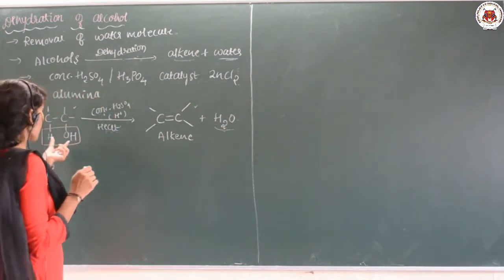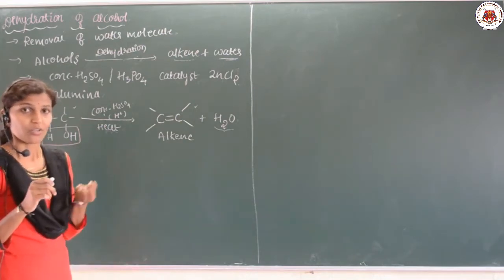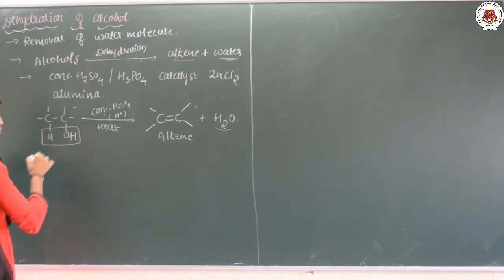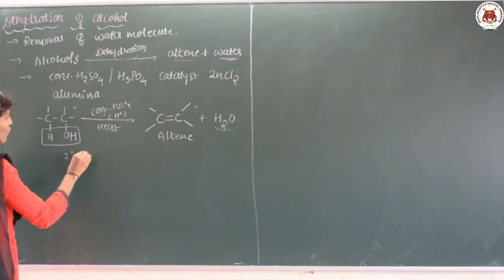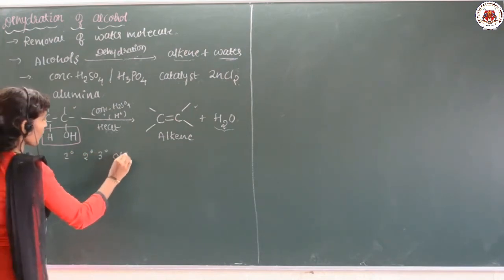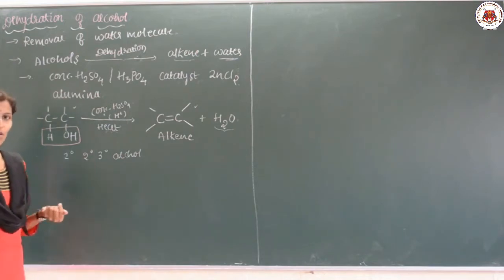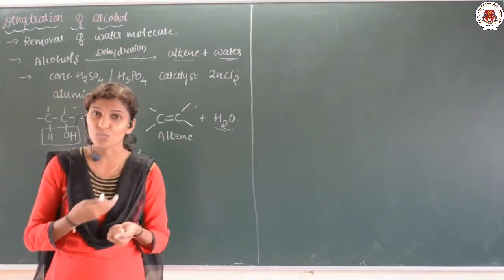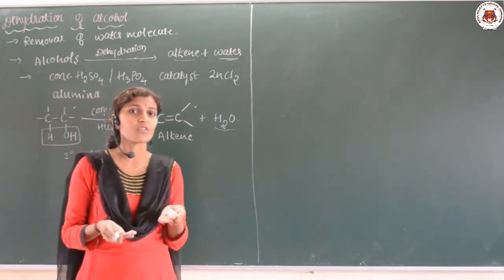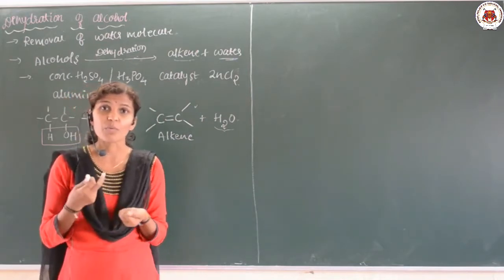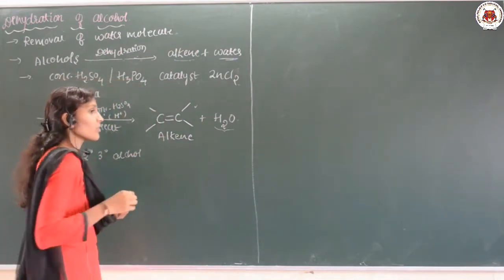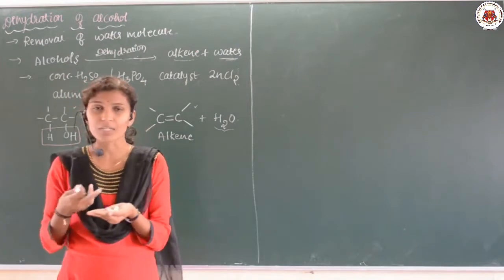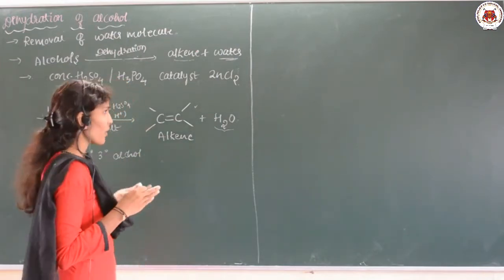Water is eliminated from the alcohol — that is dehydration. Now, as we know, in the case of alcohol there are three types: primary, secondary, and tertiary alcohols. The reactivity of dehydration for alcohol — whether dehydration is faster in primary, secondary, or tertiary — depends on the type. I will explain in which case the alcohol dehydrates fastest.